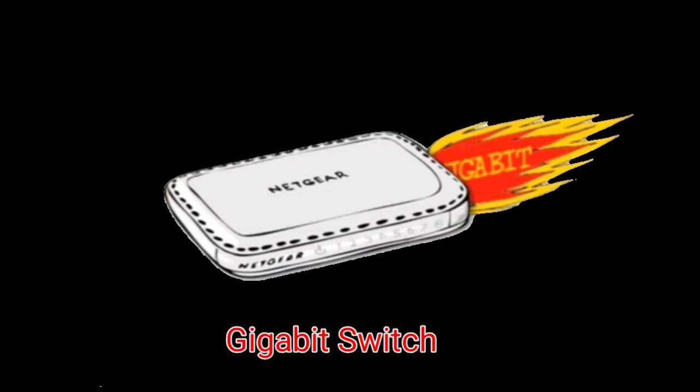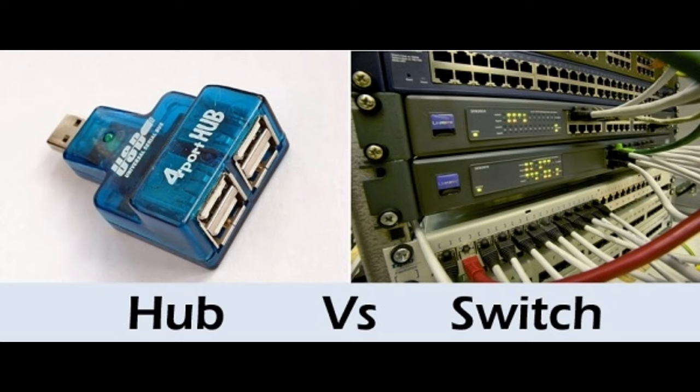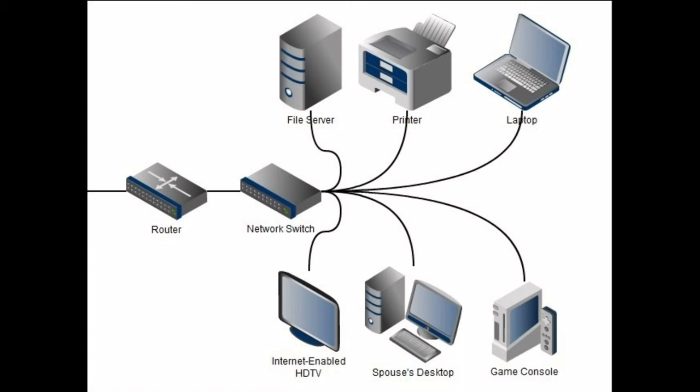If you need the fastest switch, go for a Gigabit switch because these days Gigabit switches are largely used. One thing to keep in mind — some people confuse a switch with a hub. However, hubs have been replaced by switches, as switches do the same thing with much more speed and intelligence. A router, a switch, and network cables all come together to create a fast and reliable wired network.